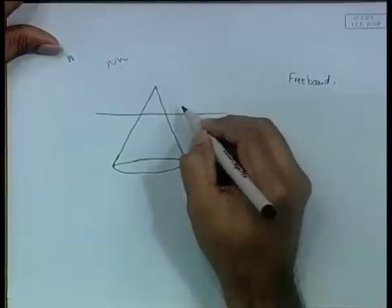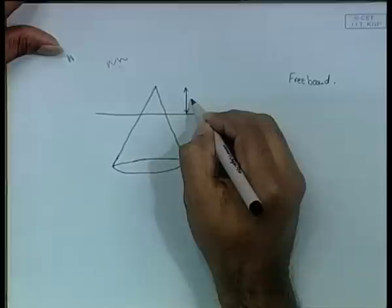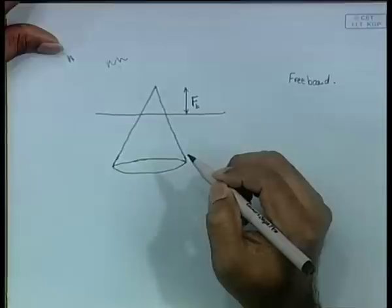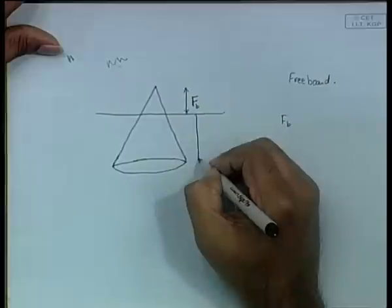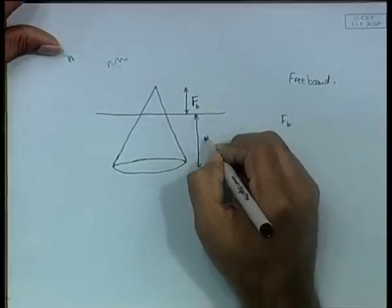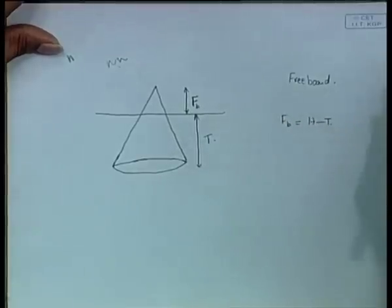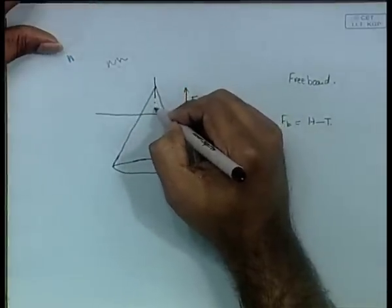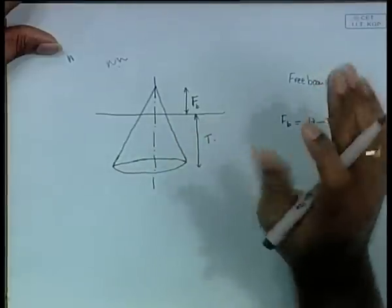You are told that the freeboard of the body is F or FB. So you can immediately derive the relation: FB equals H minus T, where H is the total depth of the cone and T is the draft. The question is similar to what was done before - you are asked what is the condition for the upright stability of this system.